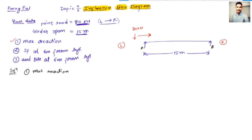What you need to do is draw the diagrammatic representation like this. When you draw the diagrammatic representation, remember that reaction is always calculated at the supports. If you calculate the reaction at point A, that is support Ra.